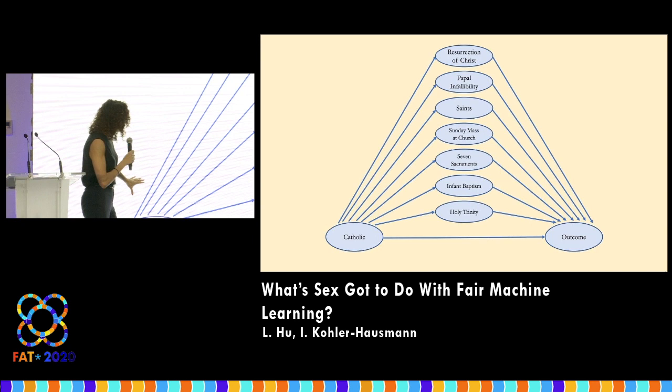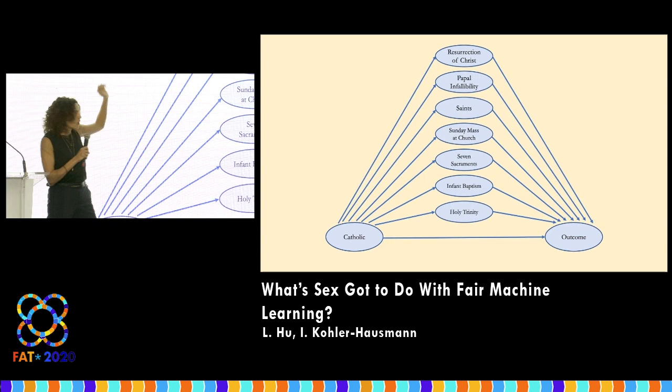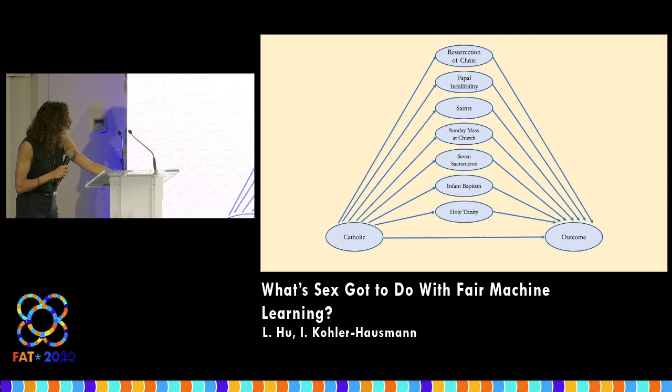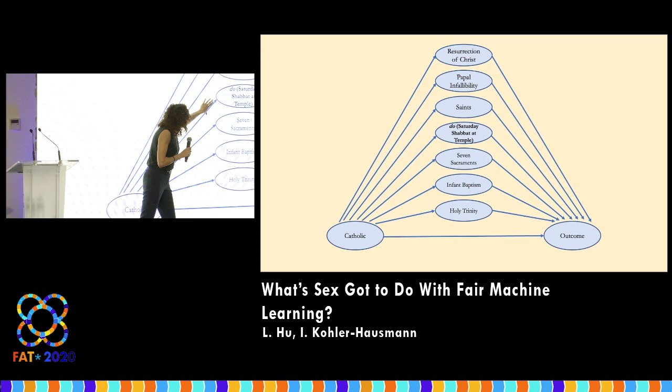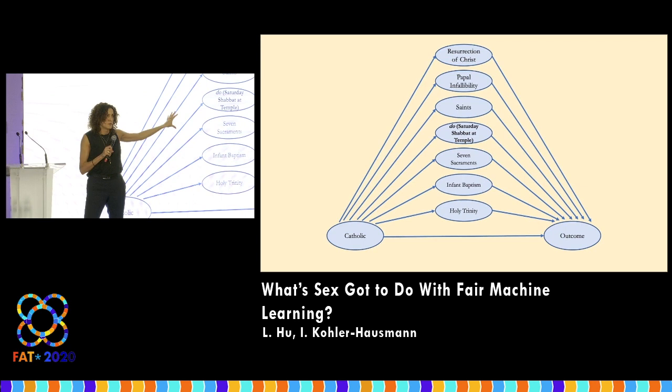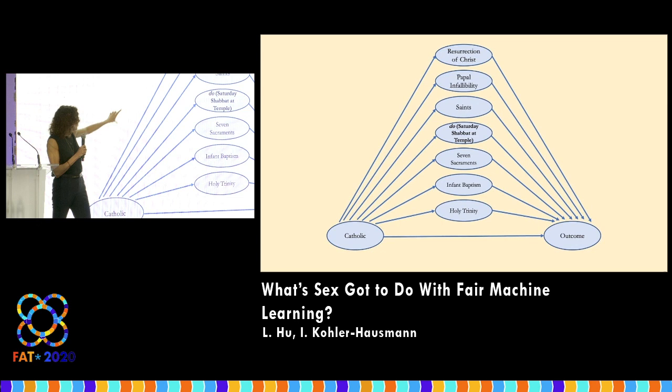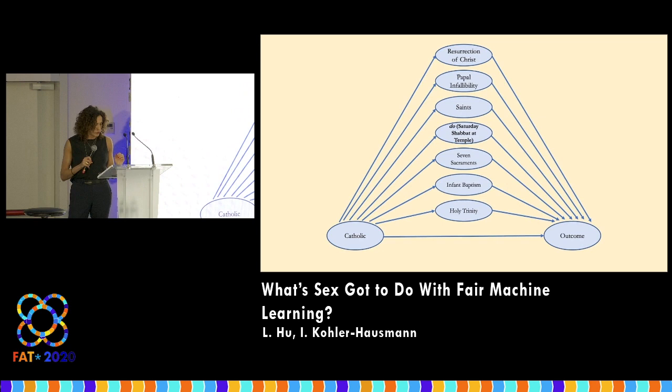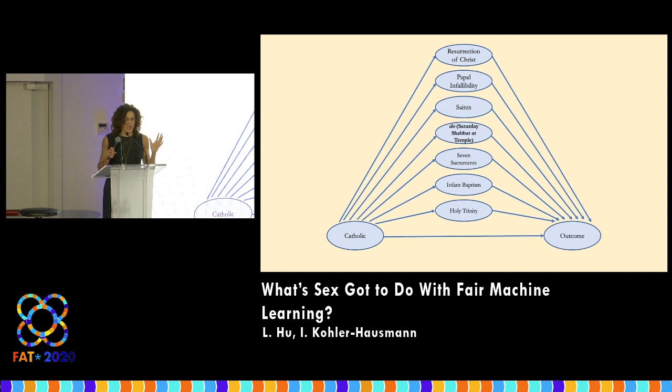If you draw a diagram like this and say Catholic causes belief in the Holy Trinity, causes attendance at Mass on Sundays, causes belief in papal infallibility — modularity holds that we could intervene at the social level with our do-operator and set the value of rituals from Sunday church to Saturday temple. And modularity holds that the relationship between Catholic and these other cause-effect pairs would be invariant — and furthermore, that the social meaning of Catholic would also be invariant to that intervention.